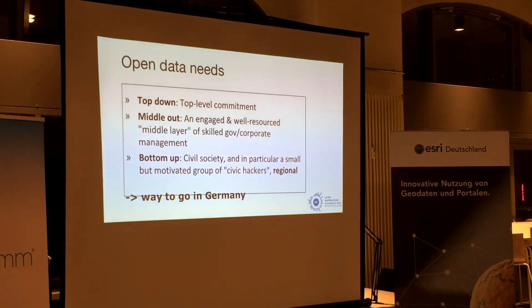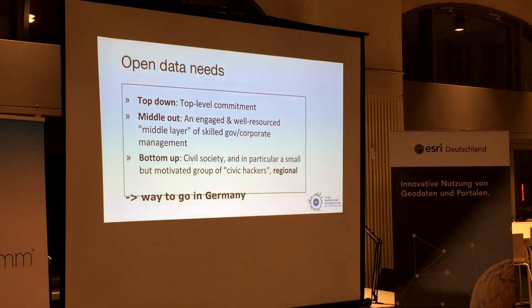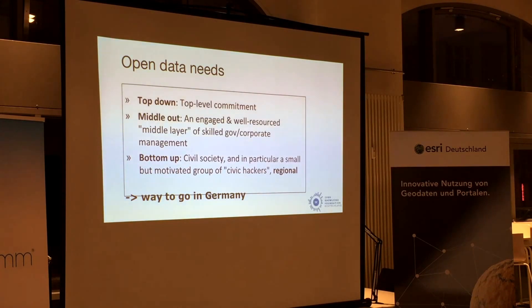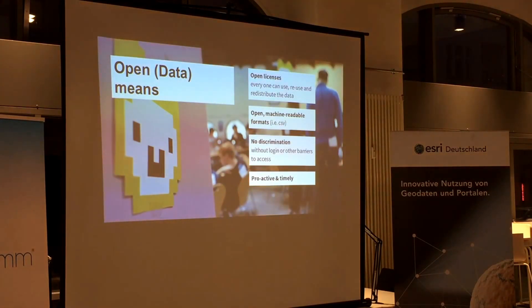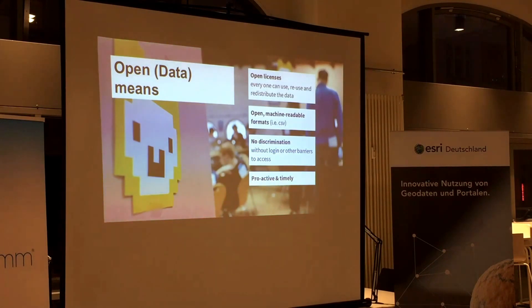In Germany we have right now the problem on all three layers where open data should be encouraged — from the top, the middle, and the bottom. We are pretty strong at the bottom, the middle is okay, but we are completely behind at the top. Compared to other countries like the UK or USA, it's not on the agenda. Open data normally means open licenses or public domain — it should be open and free to access for everyone and it should be machine-readable.